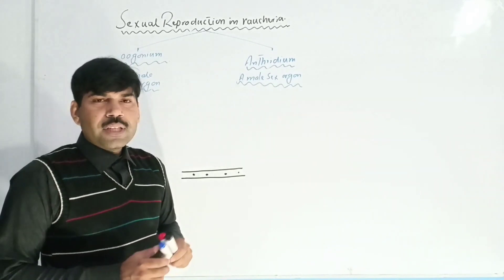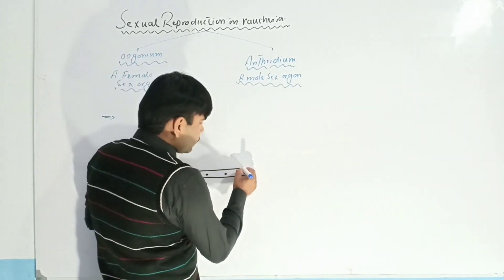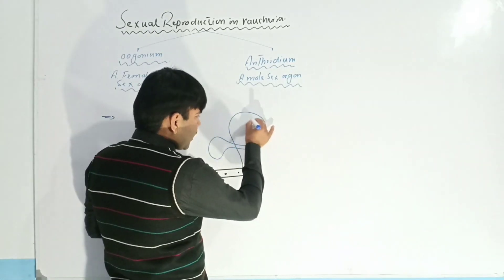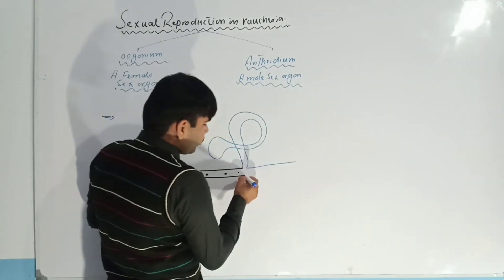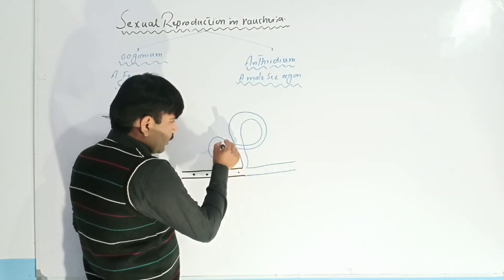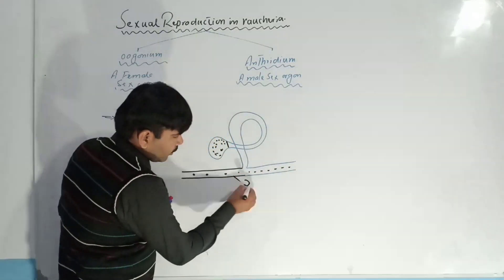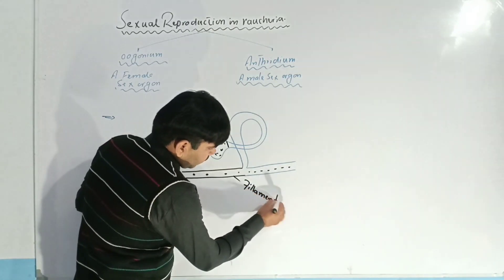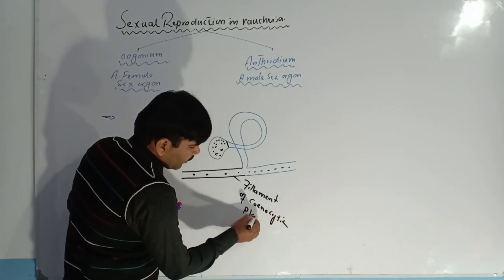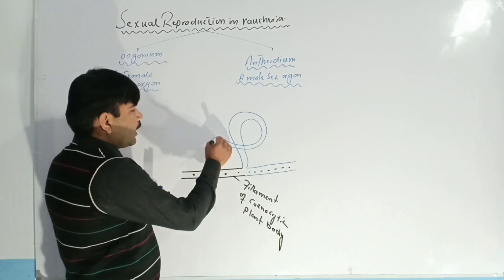The antheridia are produced on the short branches of a filament or plant body of Vaucheria. This is the male structure known as the antheridium, produced on the short branch of Vaucheria. This is essentially the antheridium — the male structure — and this is the filament, which is a coenocytic plant body.